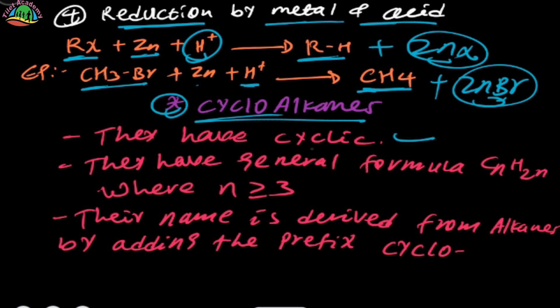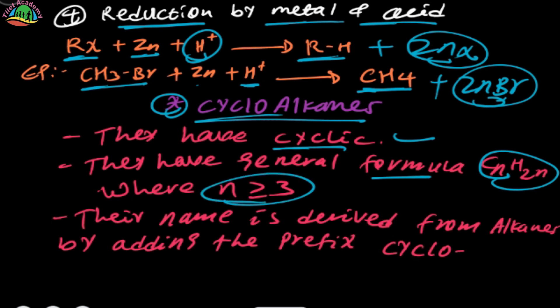The cyclic compounds follow the general formula CₙH₂ₙ, where n is greater than or equal to 3.